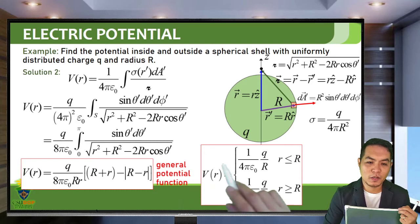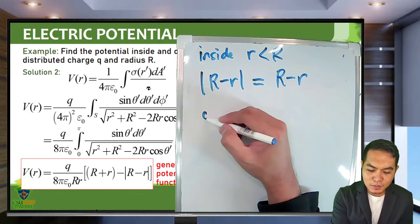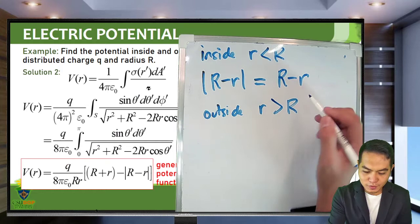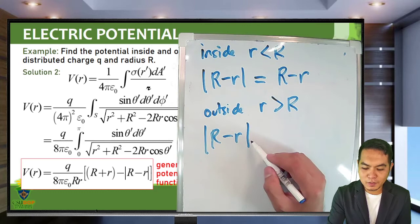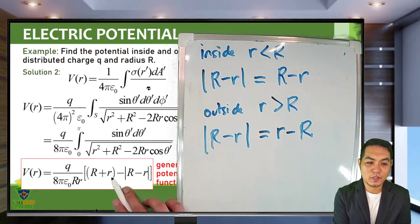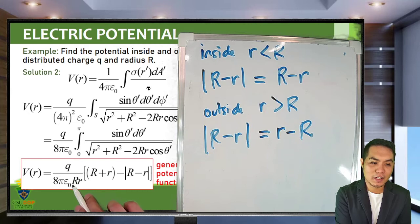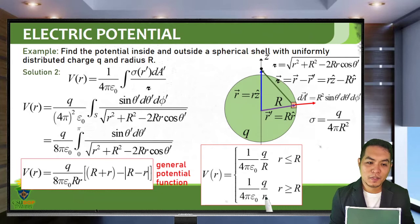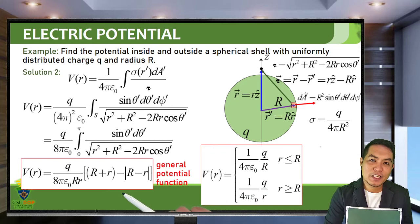For the potential outside, where small r is greater than capital R, the absolute value |R - r| equals r - R since r is now bigger. Substituting gives 2R in the numerator, and capital R cancels with the denominator, leaving small r. This gives the outside potential as (1/4πε₀)(Q/r). Both the inside and outside potentials are described by this single general potential function.